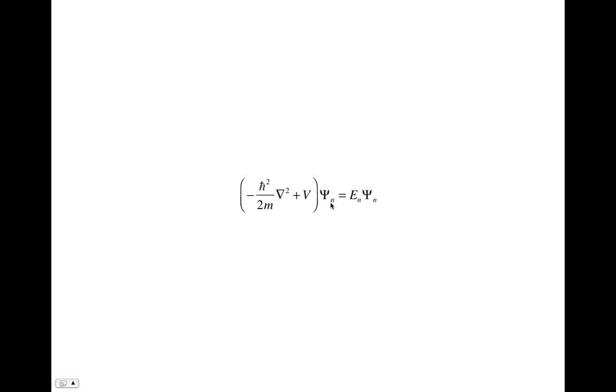And then solving this Schrodinger equation basically involves finding a function here, so that when you operate on this function with the operator, you get your function back times a constant. And that constant is the energy of your system.